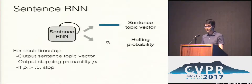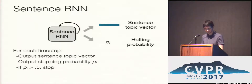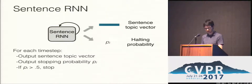Zooming in on the sentence RNN, at each time step it outputs the input to a word RNN, which we call a sentence topic vector, and a stopping probability. If the stopping probability is above one half, no more sentences are made.